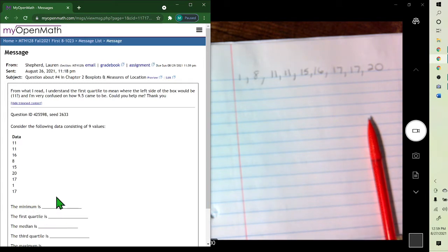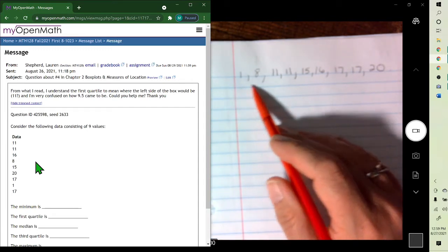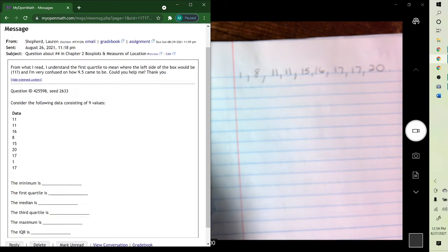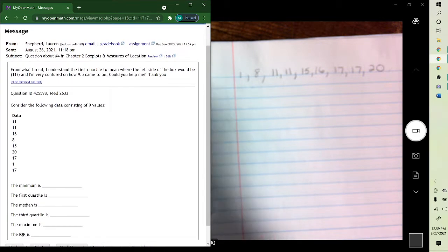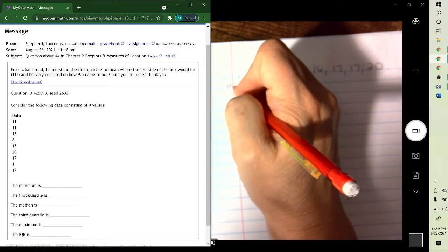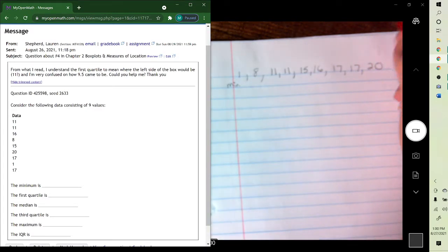And when you're finding them, the first thing you need to do is put them in order. So you want to put them in numerical order. And then to find them, the minimum we see is the 1, and the maximum is the 20.